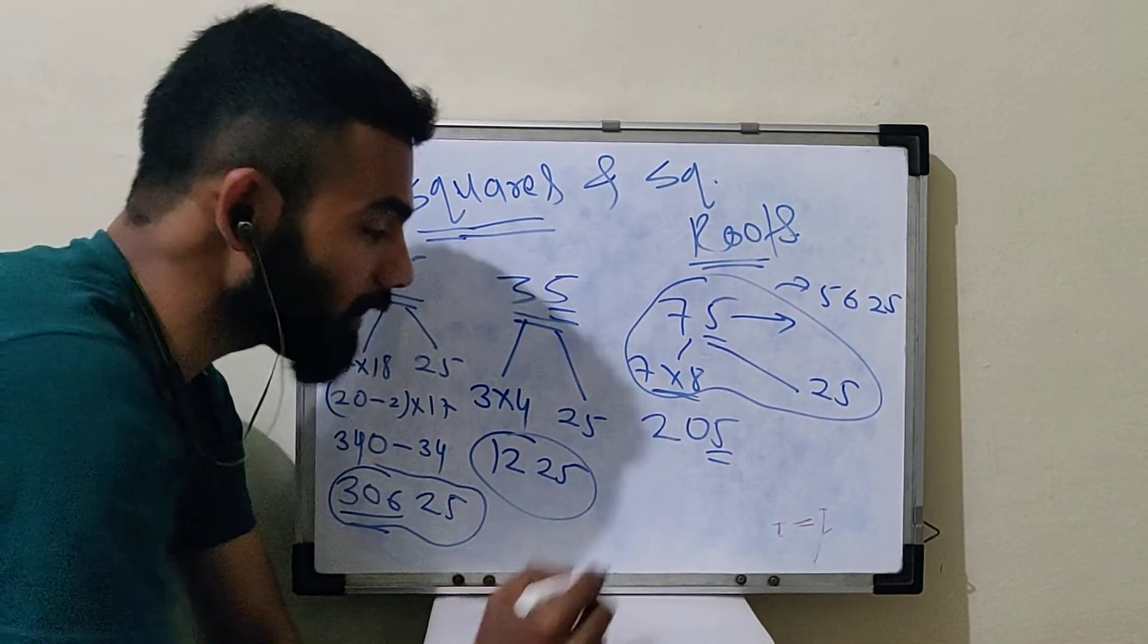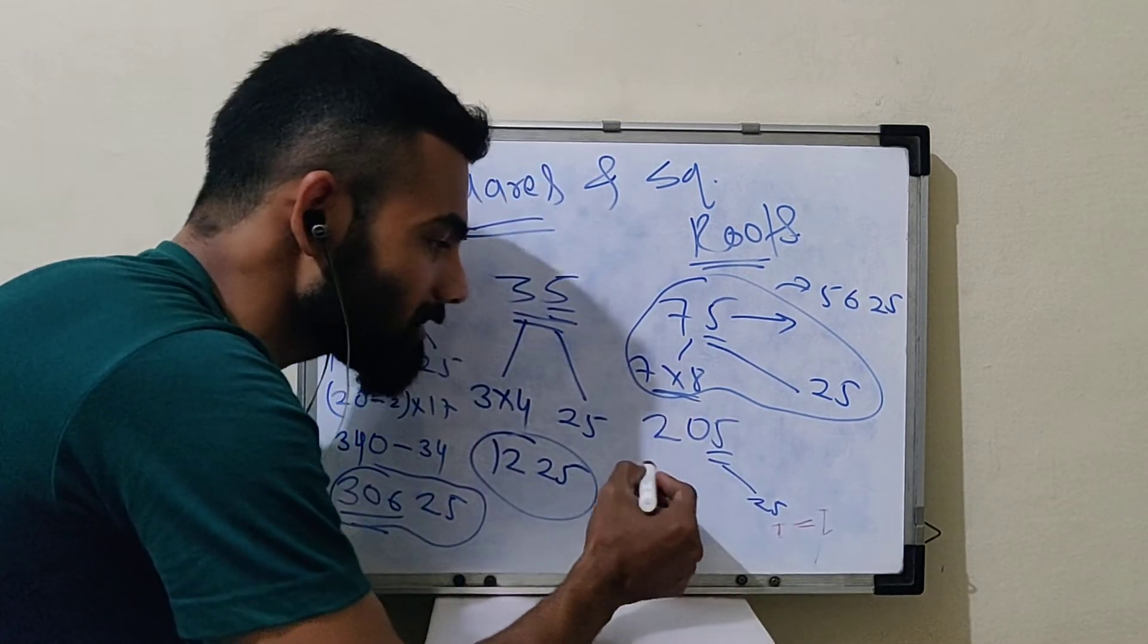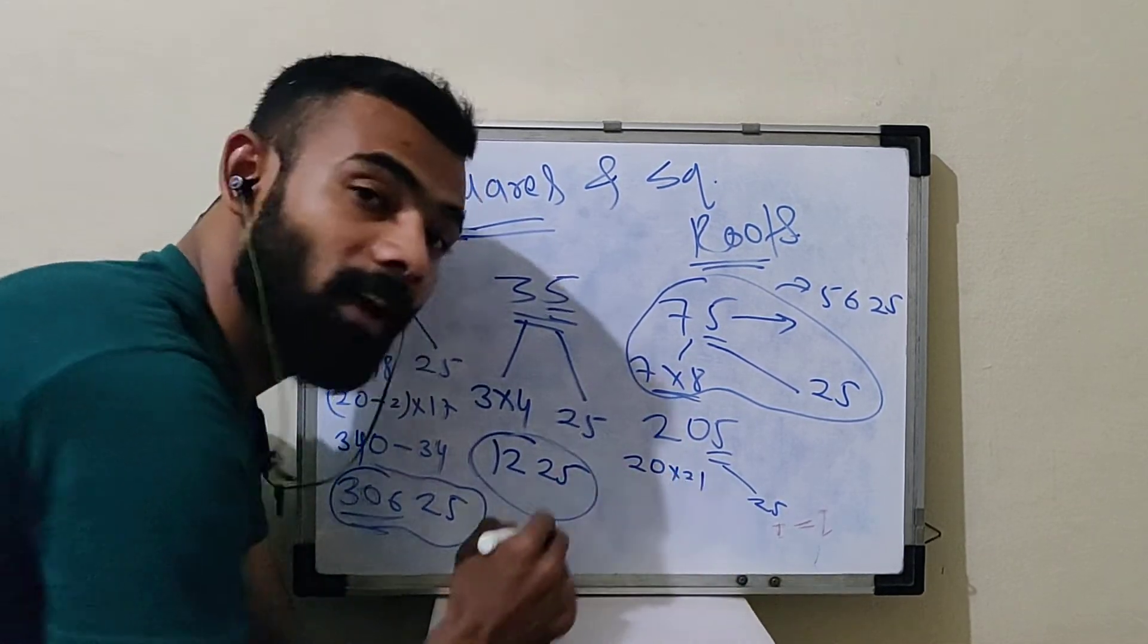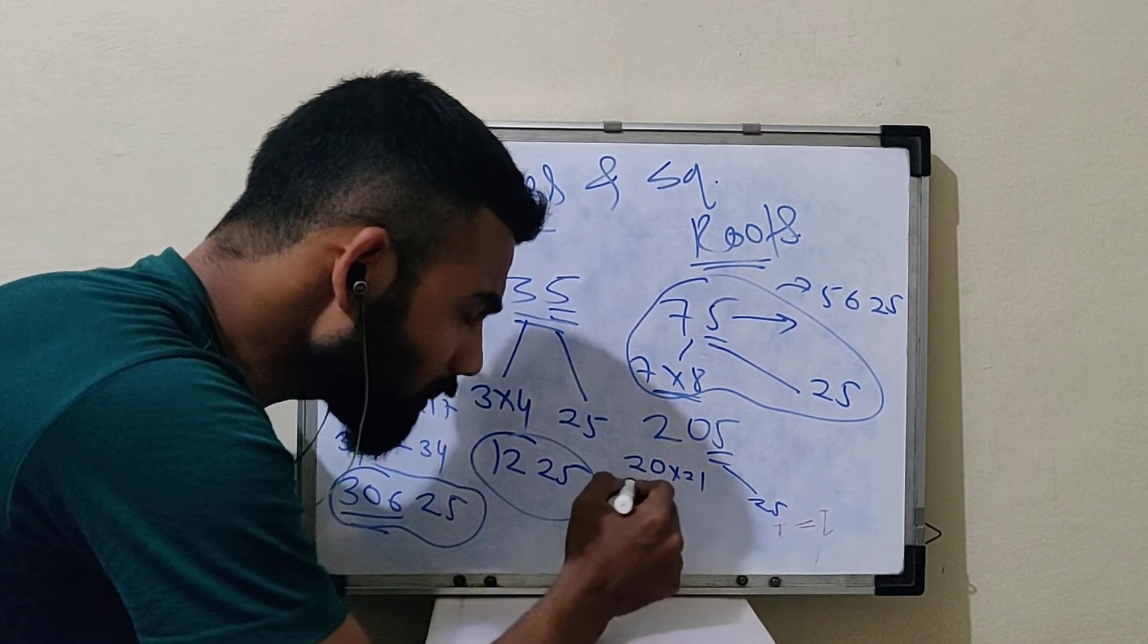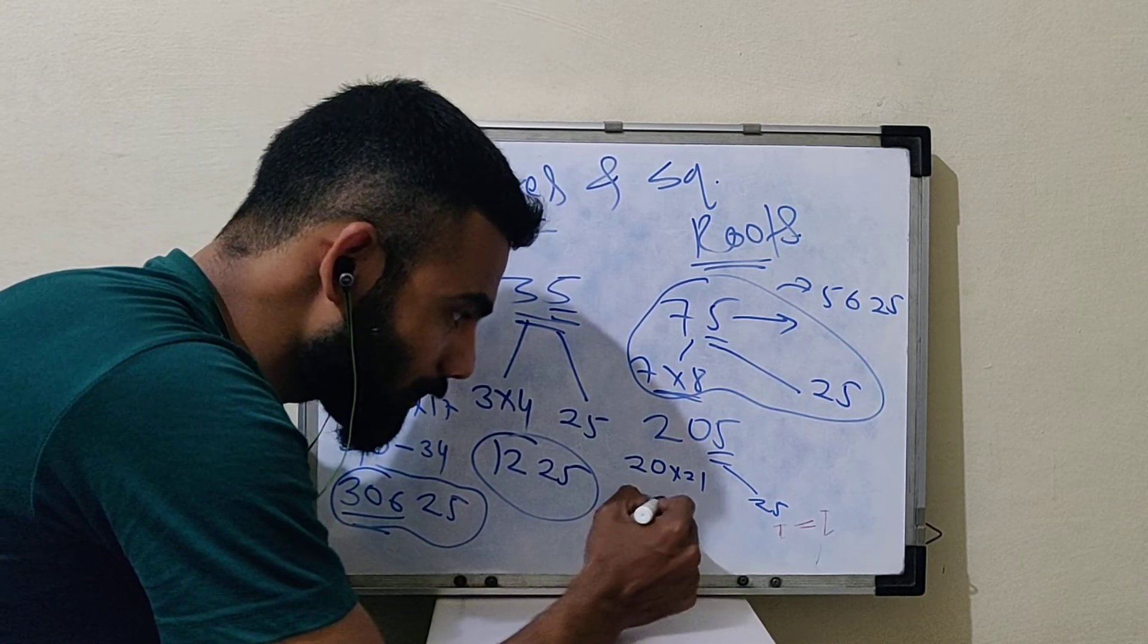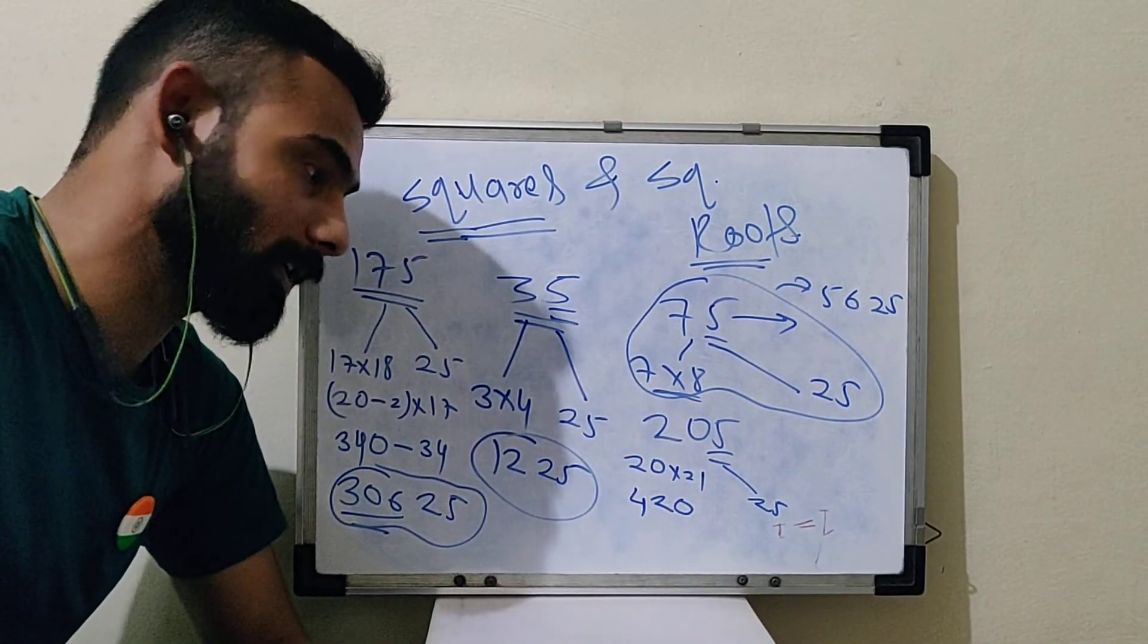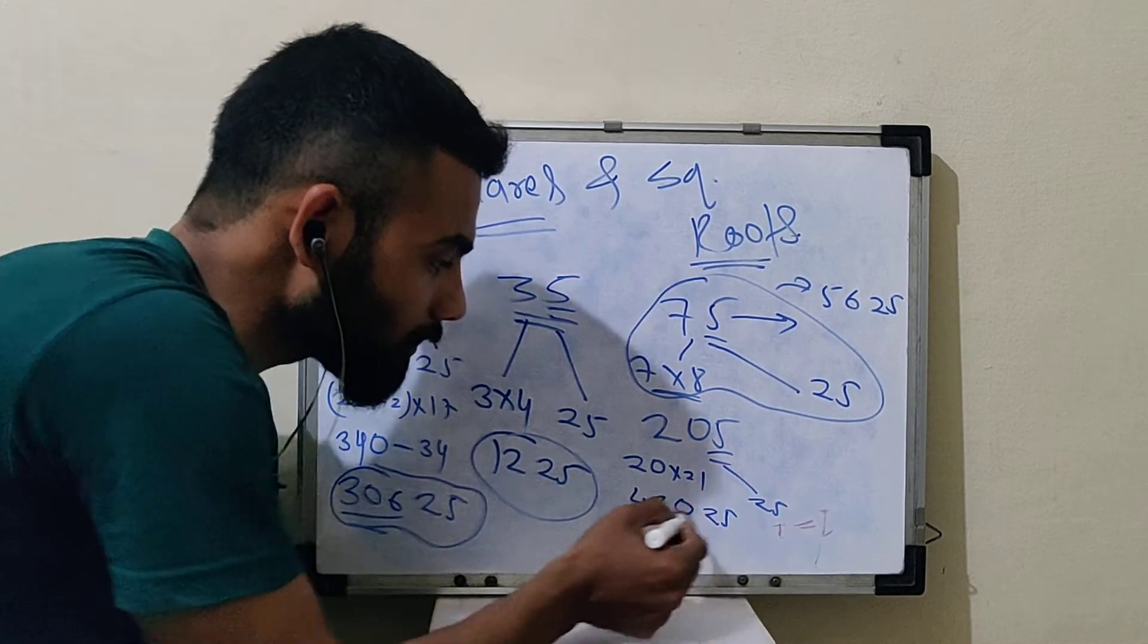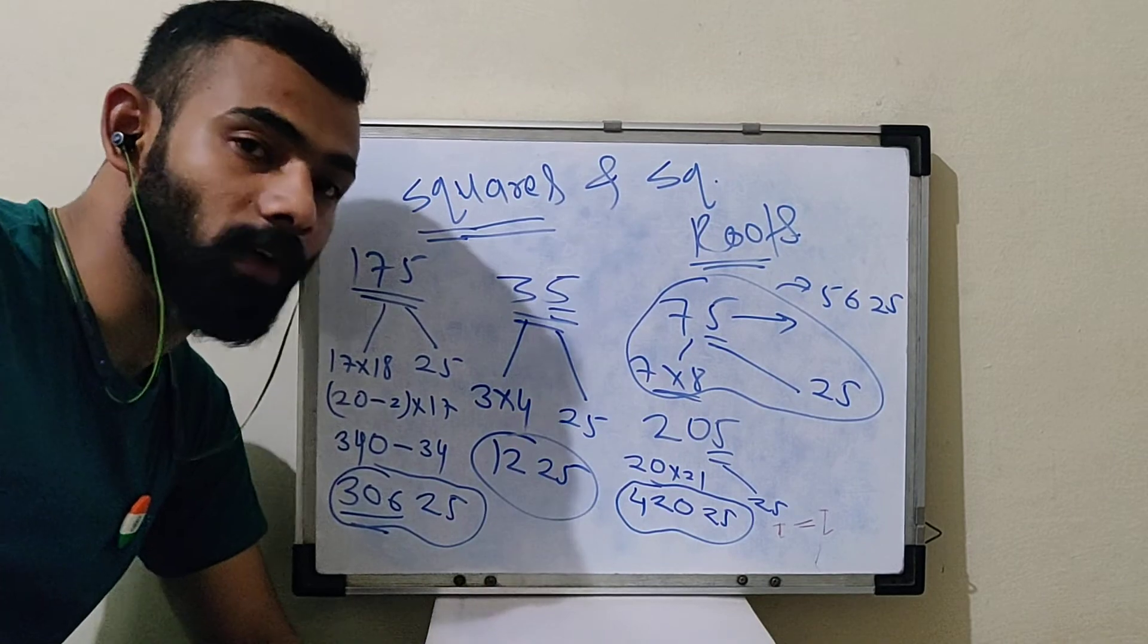What about 205? Same method. Here we have 25. And in this side, what do we write? 20 multiplied by 21. So 21, 2's are 42, 420. So this will be the square of 205.